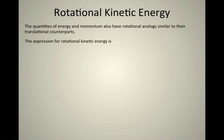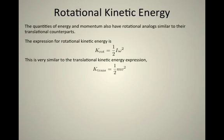We simply replace some of the variables we're used to with their angular counterparts. The expression for rotational kinetic energy is K_rot = 1/2 I ω², where I is the moment of inertia of an object and ω is its angular velocity. This is very similar to the translational kinetic energy, K_trans = 1/2 mv².